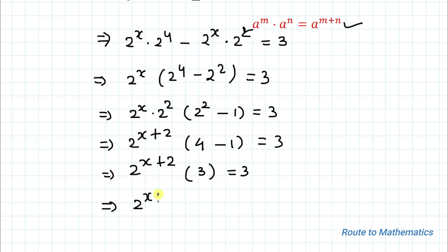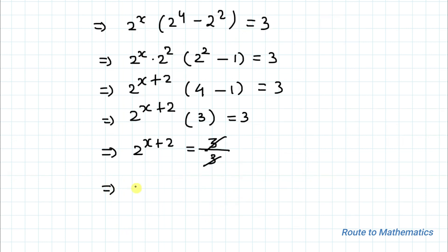Taking the 3 to the right-hand side, it divides: 3 divided by 3 cancels out, and we have 2^(x+2) equals 1.